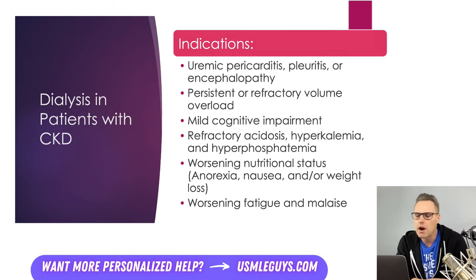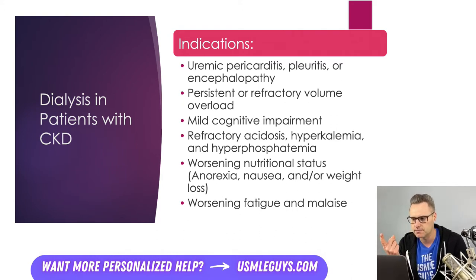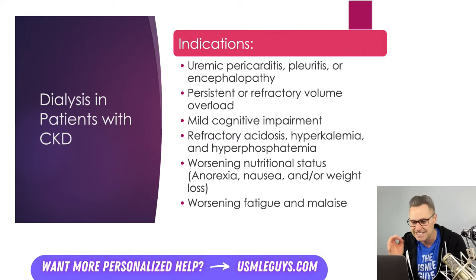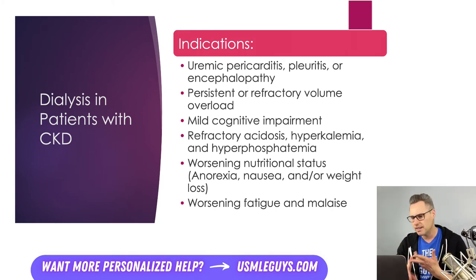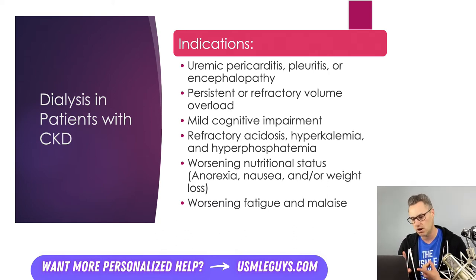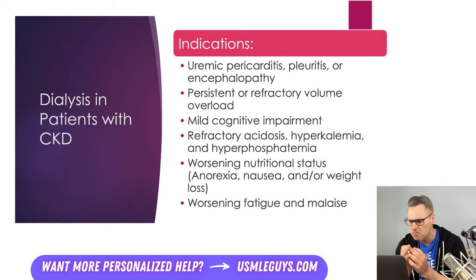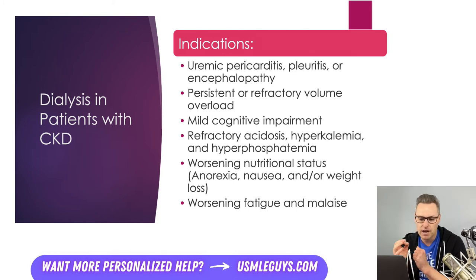There's a mnemonic for knowing when dialysis is needed: AEIOU. A stands for acidosis. E stands for electrolyte abnormalities, things like symptomatic hyperkalemia with arrhythmias or serious ECG changes — usually when potassium levels are over 6.5 and refractory to medical treatment. I stands for intoxicants, such as methanol, ethylene glycol, lithium, or salicylates. O is for volume overload. U is for uremia, which can cause pericarditis, pleuritis, and encephalopathy. Also note that uremic bleeding can occur as a result of impaired platelet function.